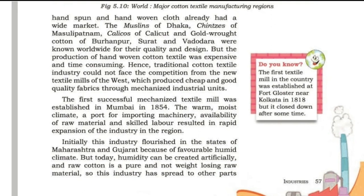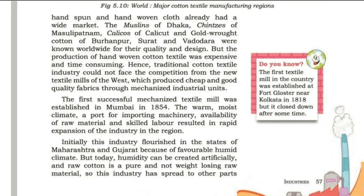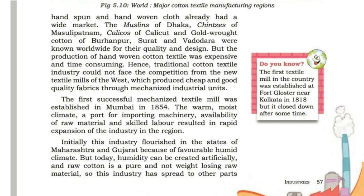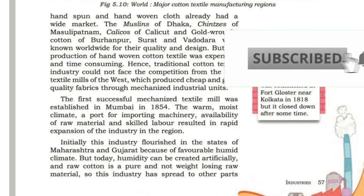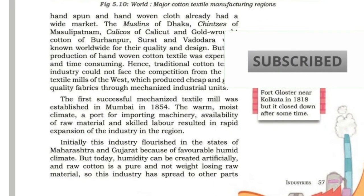The first textile mill in the country was established at Fort Gloster near Kolkata in 1818. The first successful mechanized textile mill was established in Mumbai in 1854.